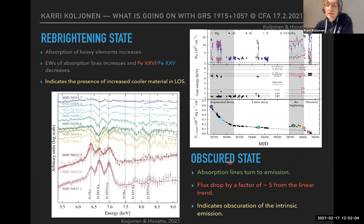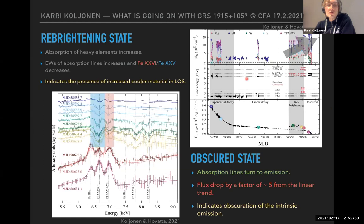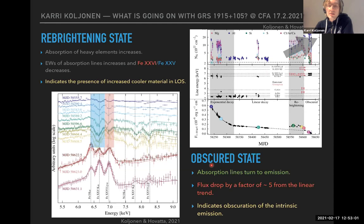Looking in more detail at what happened after the decay: from the X-ray light curve we see a small re-brightening, which we call the re-brightening state. From detailed modeling we see that the absorption of heavy elements increases at the re-brightening state, and from the X-ray spectrum the equivalent width of the absorption lines for Fe XXV and Fe XXVI increases. This indicates the presence of increased cooler material in the line of sight — something is becoming more dense between us and the central source.